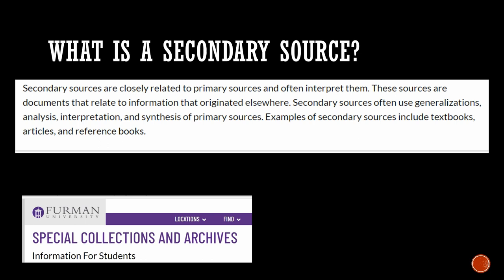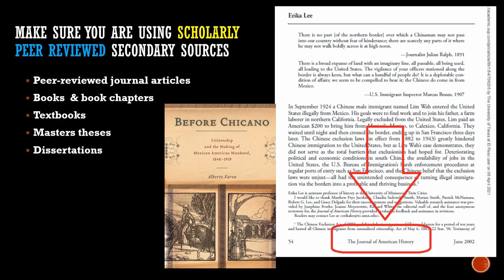So what is a secondary source? Going back to Furman University: secondary sources are closely related to primary sources and often interpret them. These are documents that relate to information that originated elsewhere. Secondary sources often use generalizations, analysis, interpretations, and synthesis of primary sources. Examples include textbooks, articles, and reference books. In academia, we ask for scholarly peer-reviewed secondary sources — this includes journal articles, books, textbooks, book chapters, master's theses, and dissertations. For all my history-related courses, I do ask that all your secondary sources be scholarly peer-reviewed sources.